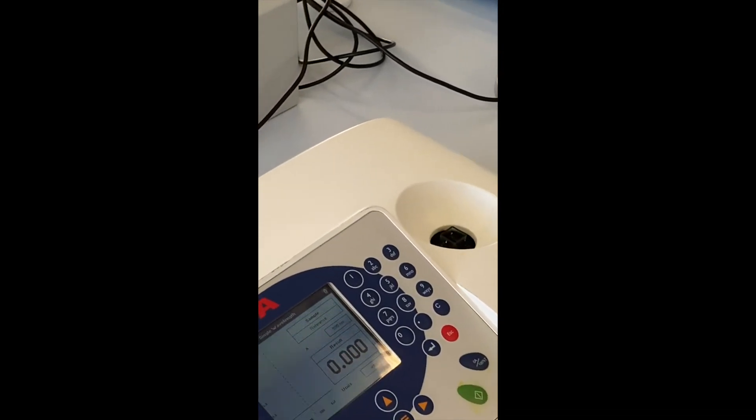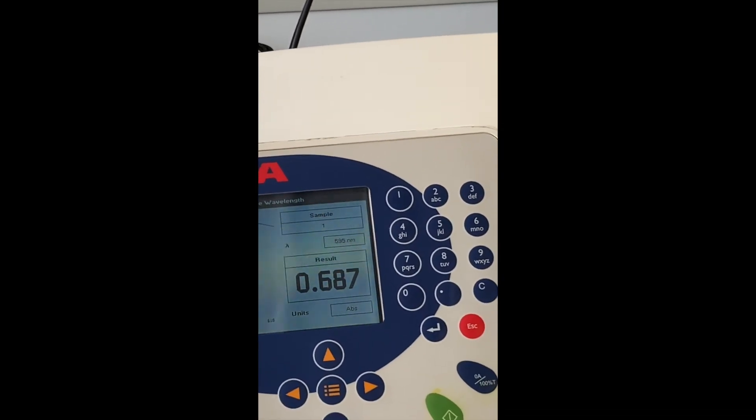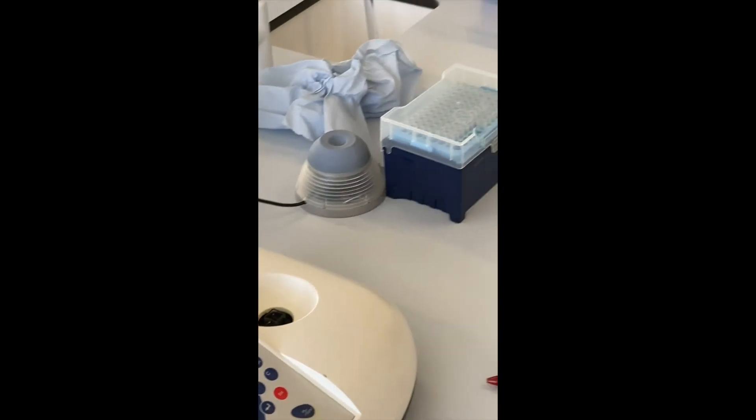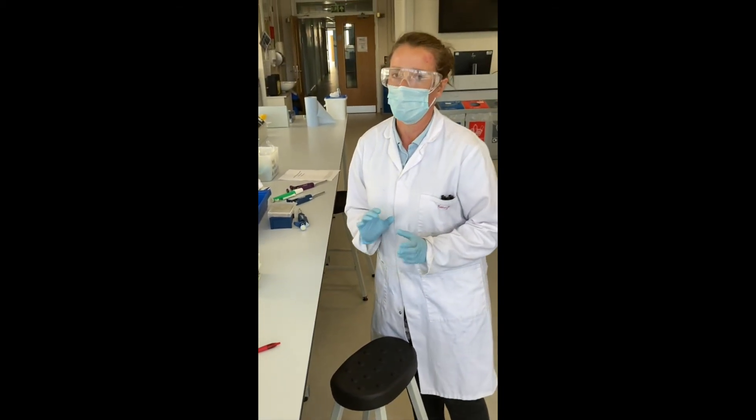The readings on the spectrophotometer should always read between 0.1 and 1. If they ever exceed or go below this, there's an issue with either your sample or your blank, so you'll need to double-check what you've done wrong.